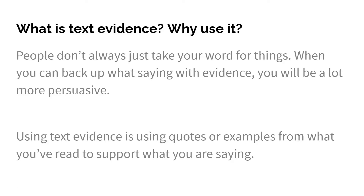Using text evidence is simply using quotes or examples from what you've read to support what you are saying. When I say quotes, I don't mean things that are already in quotation marks in your book. I mean you copy and paste a short portion of the text, put it in your answer, and add quotation marks — that's what makes it into a quote. And even if you're putting something in your own words, if the idea or thought or statistic comes from another text, you still consider that text evidence and you cite it like you would a quote.